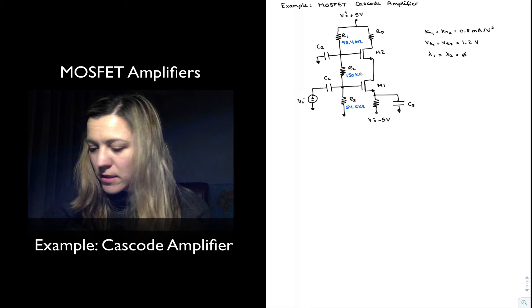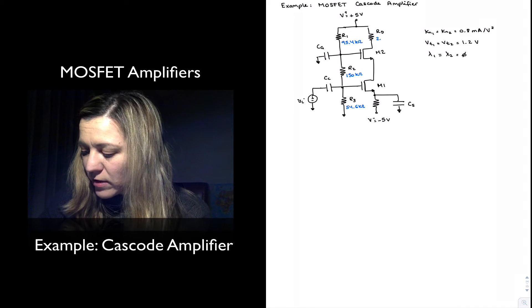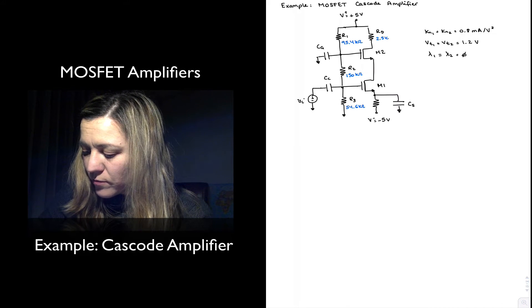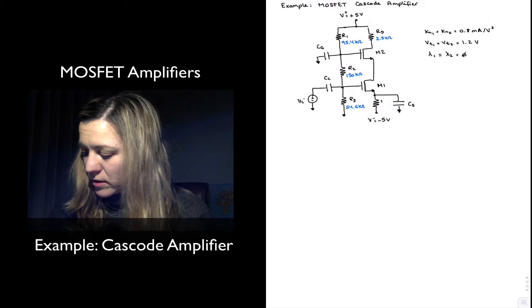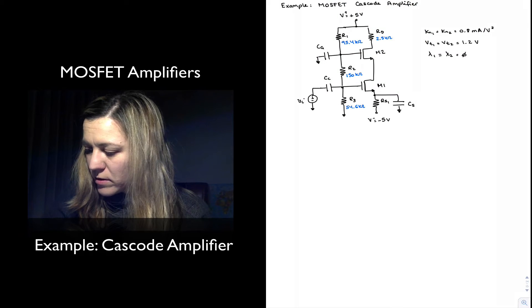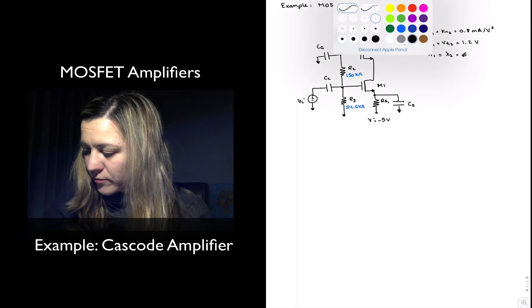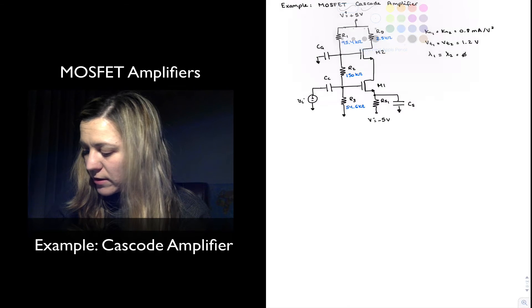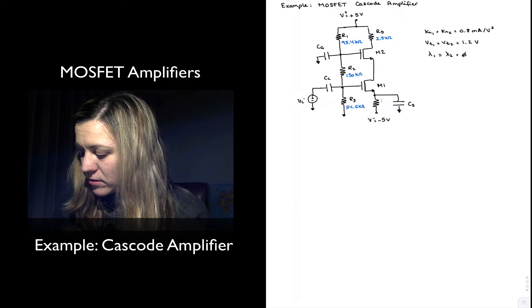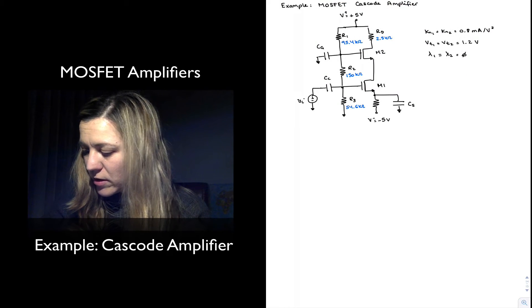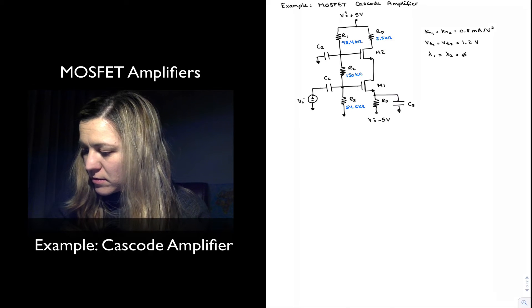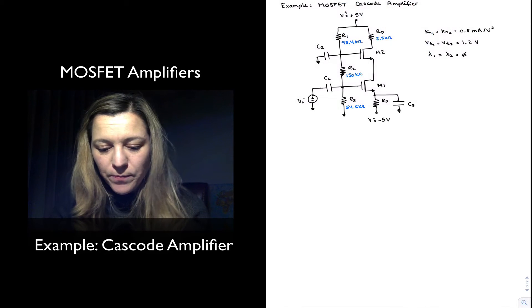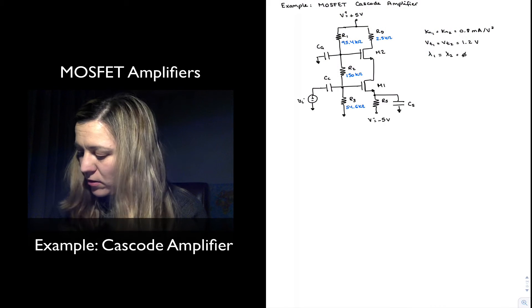Rd is equal to 2.5 kilo ohms, and RS — since there is no other RS — is equal to 10 kilo ohms.